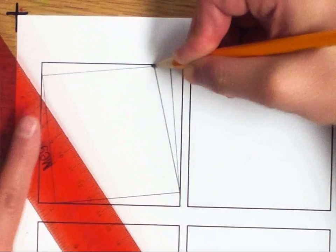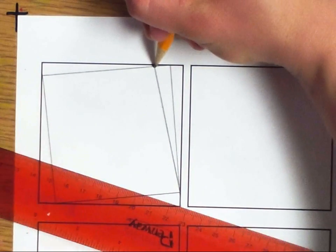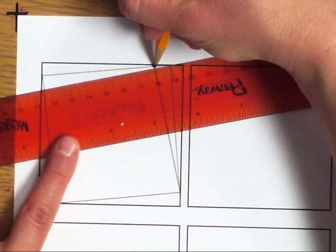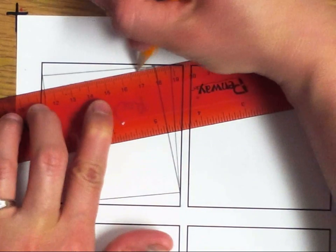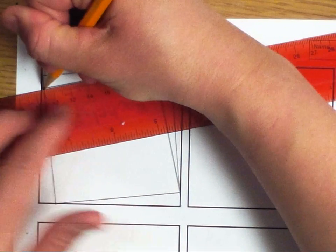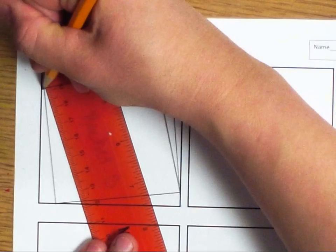So again, I'm leaving my pencil down so I don't get confused on where I was at. And I rotate my ruler around and make a skinny right triangle.